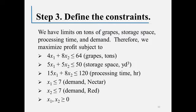The processing time for a batch of Nectar is 15 hours and for a batch of Red is 8 hours. Production is also limited to 120 hours of processing time, so 15X1 + 8X2 must be less than or equal to 120. The next sentence says demand for each type of wine is limited to 7 batches, so X1 ≤ 7 and X2 ≤ 7. We also can't have negative batches, so both X1 and X2 must be greater than or equal to zero.